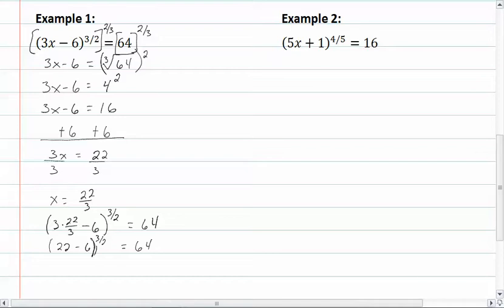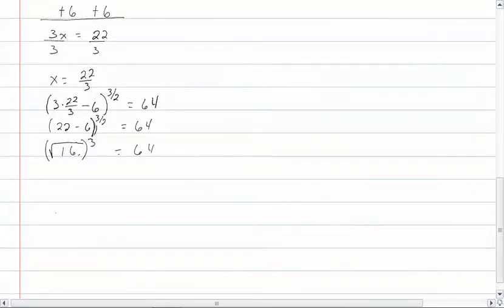So now we have 16, square root of 16 I should say, because we want to put this into this form to make it easier to do our calculation. Square root of 16 is 4, so we have 4 cubed, which equals 64.